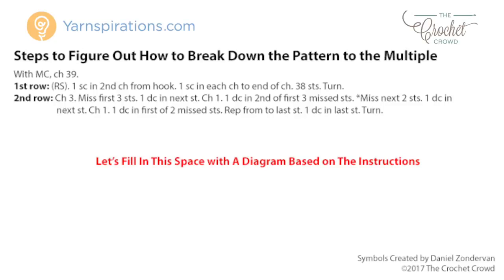Why row number two? Row number one was simply one single crochet all the way across, so there's no evidence of a multiple there. You have to jump ahead to row number two where the first evidence of a multiple appears. It doesn't always have to be row two — it could be row one, three, or five. You just have to look for the first time you can see a multiple is happening. How do you identify where the multiple is? Look for the asterisks — that will give you a clear indication. As a rule of thumb, the repeat multiples usually appear for the first time in rows one through four, and you need to find where it first appears then work backwards to the starting chain.